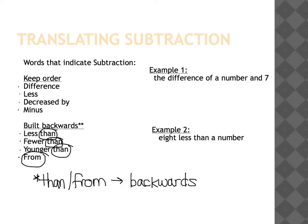Look at example one: 'the difference of a number and seven.' When you see the word 'difference,' it means subtraction. Difference is also one where we keep the order, so the words that follow are not going to change order. We take a number — which would be n — and the word 'and' indicates the operator, then seven. So 'the difference of a number and seven' is translated as n − 7.